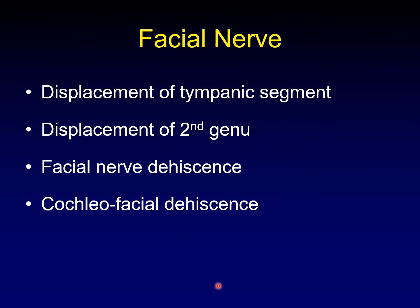Moving on to the facial nerve. We want to discuss any displacement of the tympanic segment of the facial nerve, any displacement of the second genu away from the posterior aspect of the mesotympanum, and facial nerve dehiscence. I want to draw a distinction between displacement of the tympanic segment and facial nerve dehiscence. There are also other dehiscences within the inner ear that are important — in particular, cochleofacial dehiscence.